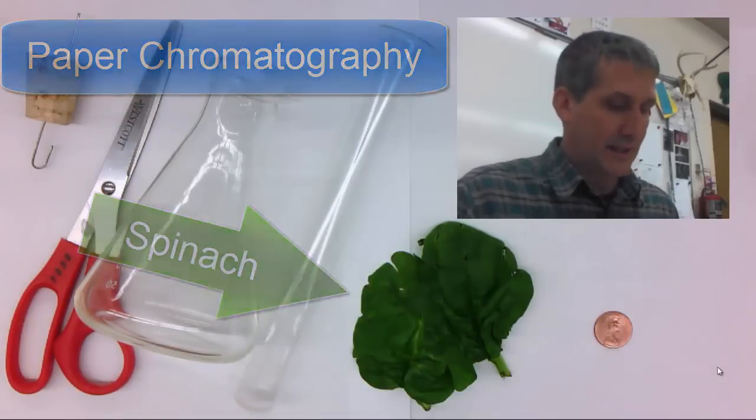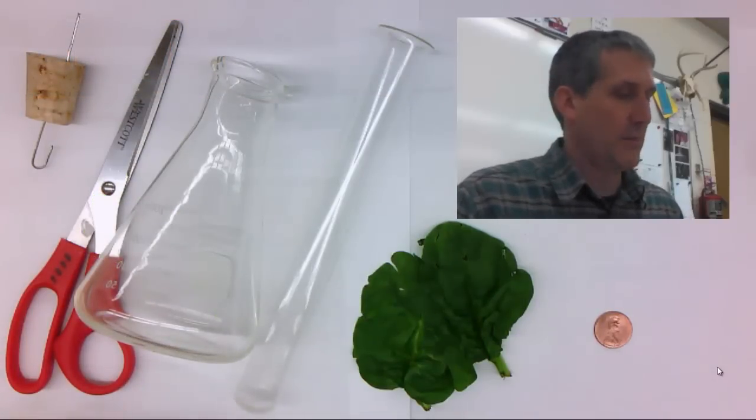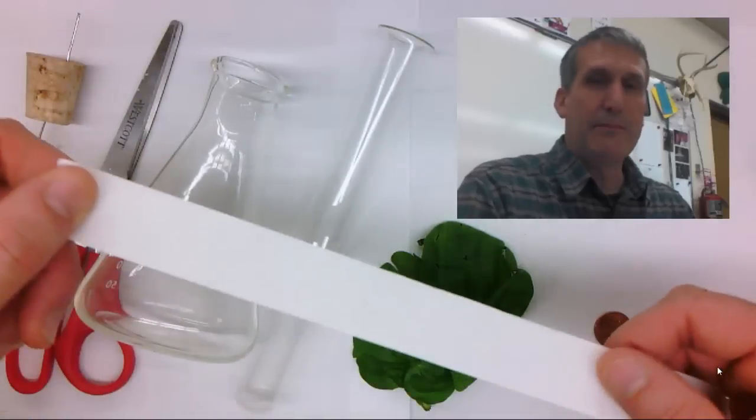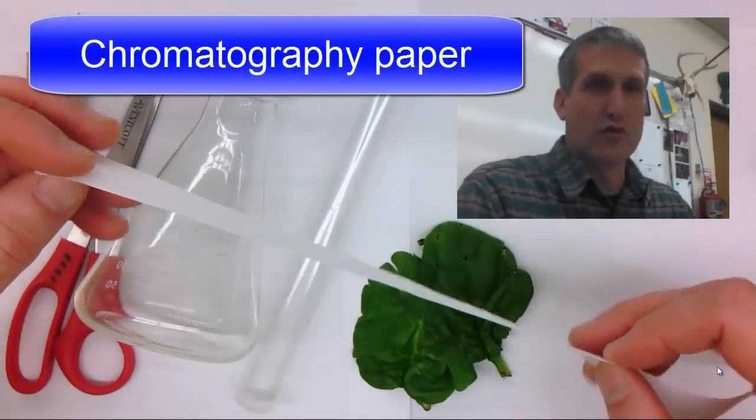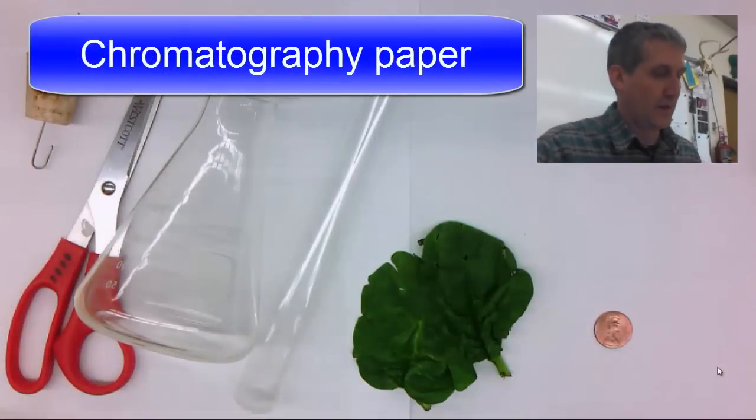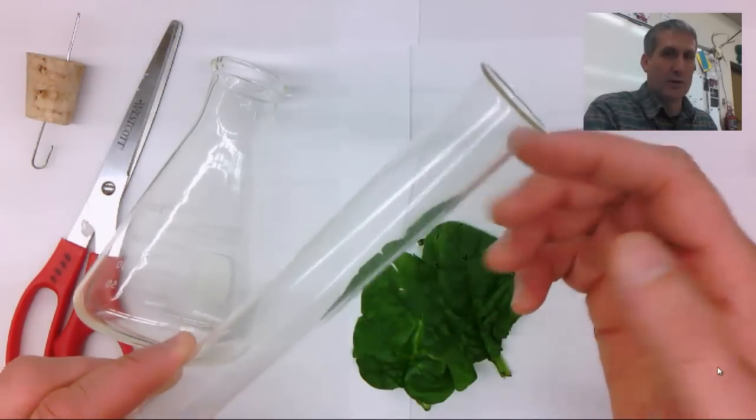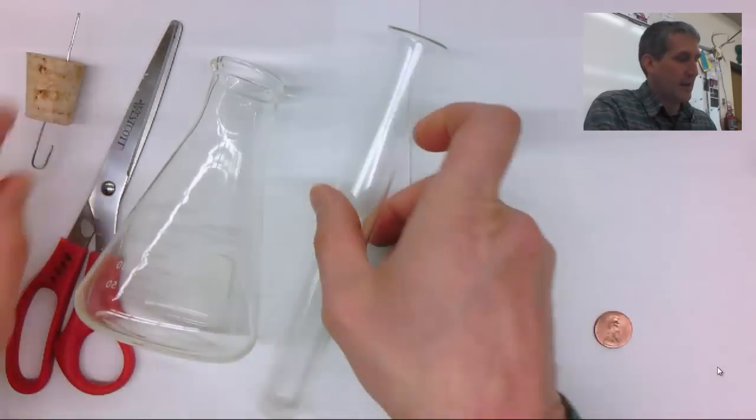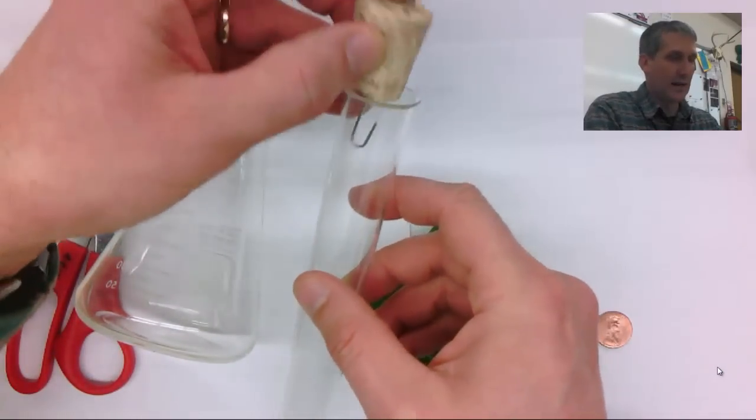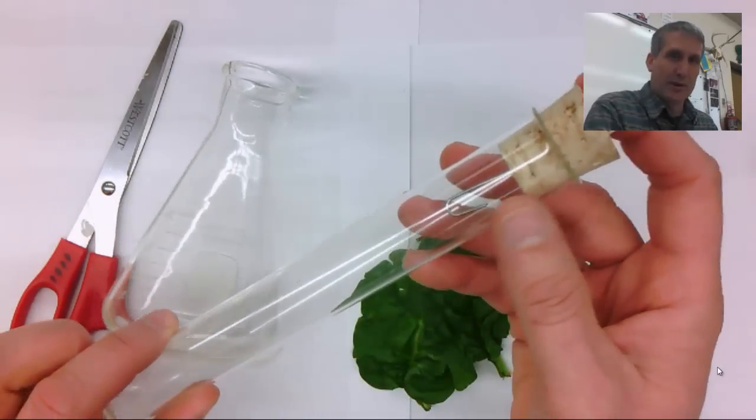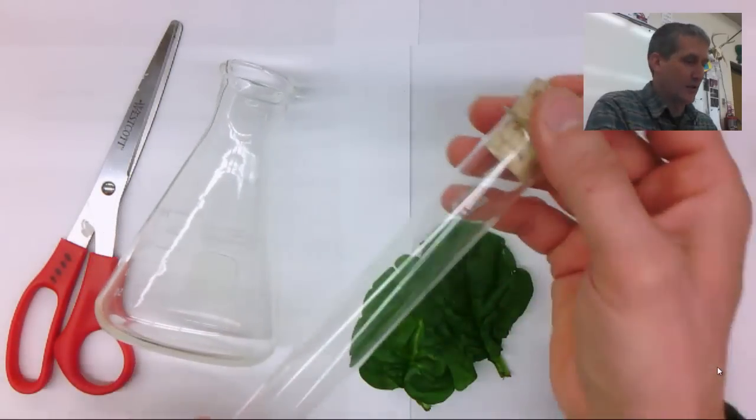Let's talk about the materials first. The main thing that you'll need is a piece of chromatography paper. You will also need a test tube to put the chromatography paper in, and you'll need a cork to suspend the chromatography paper in the test tube.